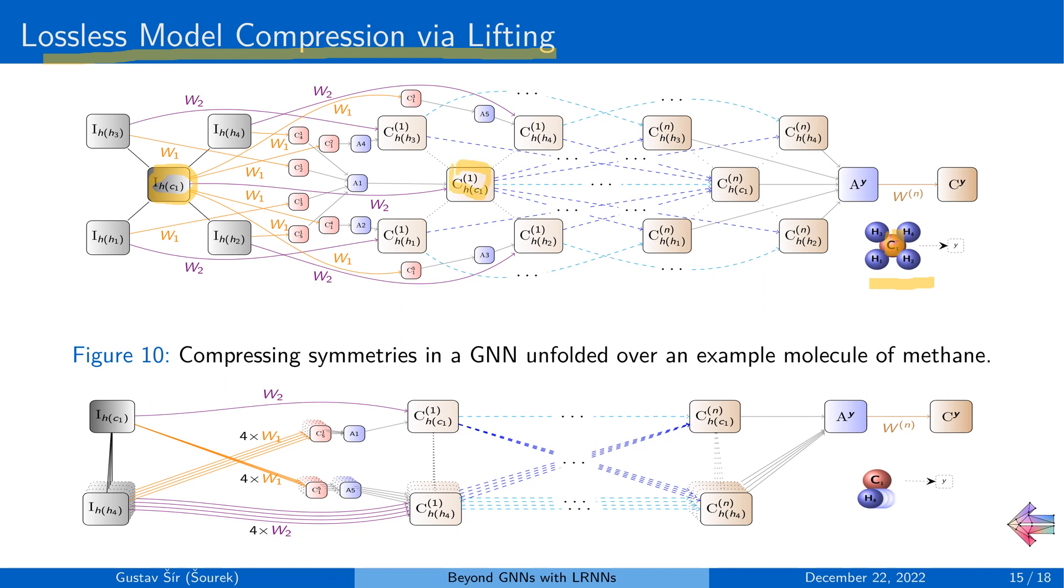So this means that if we can detect these symmetries, we can effectively compress all these equivalents of computations into a single instance, which will then be carried out only once and broadcast it into respective places in the computational graph. So this leads to a functionally equivalent, a typically much smaller computational graph as shown here in the bottom.